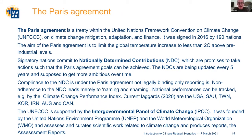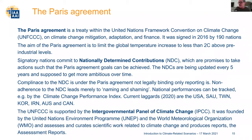When looking at climate change governance around the Paris Agreement, there are a lot of bodies and acronyms involved. The Paris Agreement is a treaty under the United Nations Framework Convention on Climate Change, part of a series that started with the UNFCCC, then the Kyoto Protocol in 2005, and the Paris Agreement which has been in force since 2016. Signatory nations commit to Nationally Determined Contributions, or NDCs — promises to take actions such that Paris Agreement goals can be achieved. These NDCs are updated every five years and are supposed to get more ambitious over time.